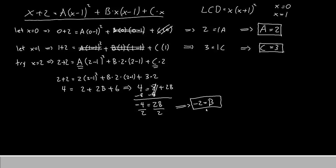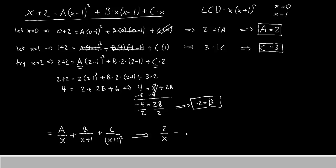So we now know A, B, and C. To complete the process, our partial fraction is A over x, plus B over x minus 1, plus C over x minus 1 squared — exactly what we wrote at the very beginning. Replacing A, B, and C with the numbers we found, our answer is 2 over x, minus 2 over x minus 1, plus 3 over x minus 1 squared. This is our final partial fraction decomposition. Thank you all for watching, we'll see you again next episode.